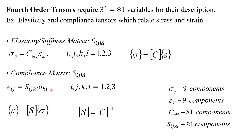Now let's go to higher order tensors — fourth order tensors. They require 81 variables for their description: 3⁴ = 81. That's a lot of values needed to fully describe fourth order tensors. Examples of fourth order tensors are the elasticity and compliance tensors, which relate stress to strain in Hooke's law. The elasticity or stiffness tensor is referred to as C. Because it's a fourth order tensor, you see four indices: C_ijkl, relating stresses to strains.